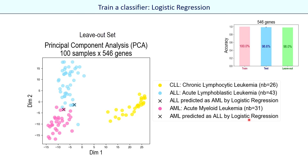It can be interesting to see where prediction failed. This figure shows a PCA for the leave-out dataset with 100 samples. The crosses show bad predictions: a cross on a blue point means the real sample is acute lymphoblastic leukemia while our prediction classified it as acute myeloid leukemia, and the situation is opposite for the second error. Both errors are placed near the boundary between two classes, which is difficult for our classifier. For the third class, chronic lymphocytic leukemia, the prediction is perfect, as this class is well separated from the others.